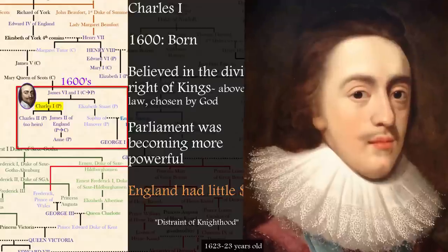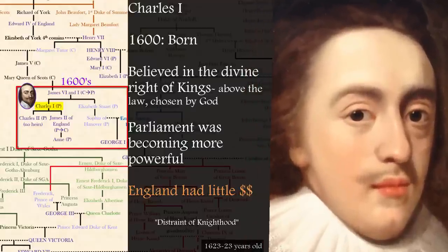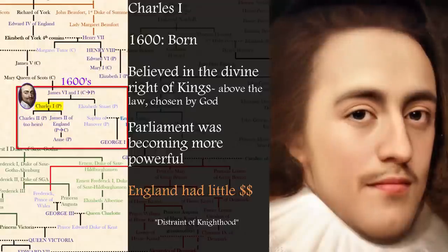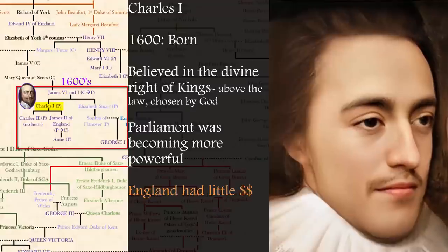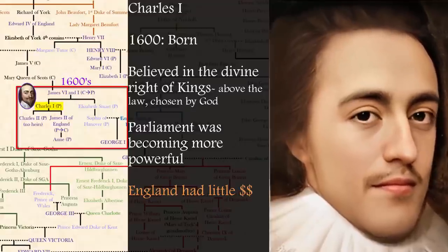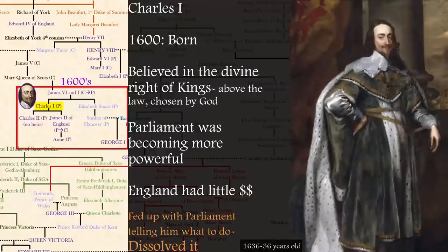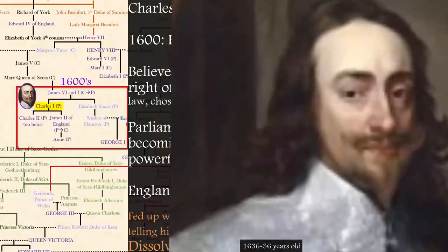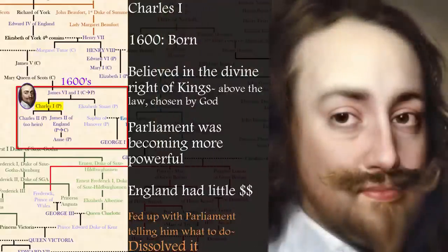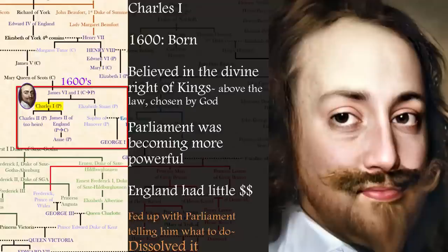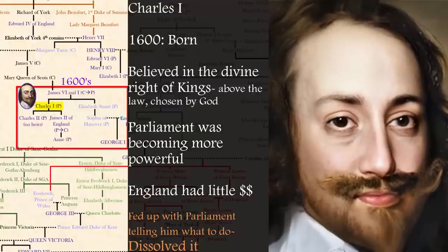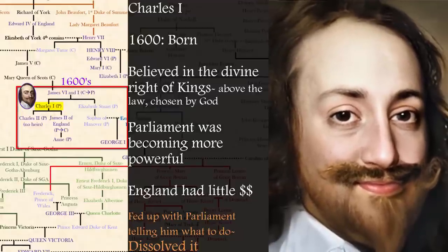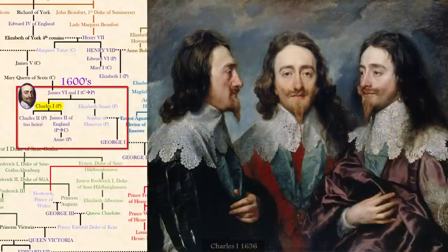For example, distraint of knighthood means that anyone who earns more than 40 pounds from their land has to come to his coronation to be knighted — if not, you get fined. Another example is that he granted monopolies to people. You can imagine this not sitting well with the public. In fact, he lost popular support over public welfare issues, affecting thousands of people. As a result, with all this disagreement, he dissolved Parliament when faced with opposition, effectively ruling alone. In his first four years of ruling, he dissolved Parliament three times and once for 11 years, only reassembling it to raise funds when he ran out of money again because of expensive foreign wars. In short, Parliament got fed up with him — he just wasn't cooperating.